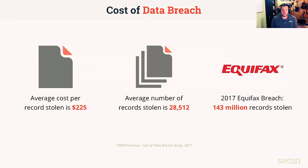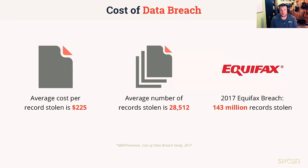The average cost per stolen record, according to the Ponemon study in 2017 sponsored by IBM, is $225 per record — closer to $300 or $325 if those are medical records. The average number of records stolen is 28,500. When you multiply those two numbers, you can see the impacts on any size organization. There are fringe cases we hear about all the time, like Equifax, who in 2017 lost 143 to 145 million records — including 140-some million social security numbers, 100 million addresses, and close to 300,000 credit card numbers exposed.